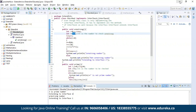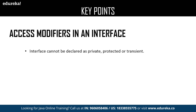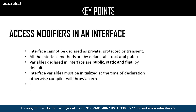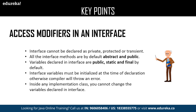The next key point is access modifiers in an interface. An interface can be declared as private, protected, and transient. All interface methods by default are abstract and public. Variables declared in an interface are public, static, and final by default. Interface variables must be initialized at the time of declaration, otherwise the compiler will throw an error. Inside any implementation class, you cannot change the variables declared in an interface.